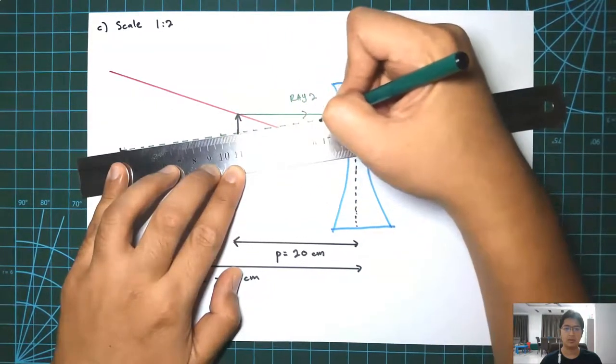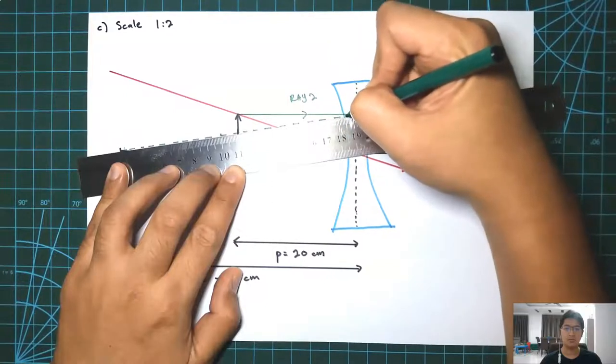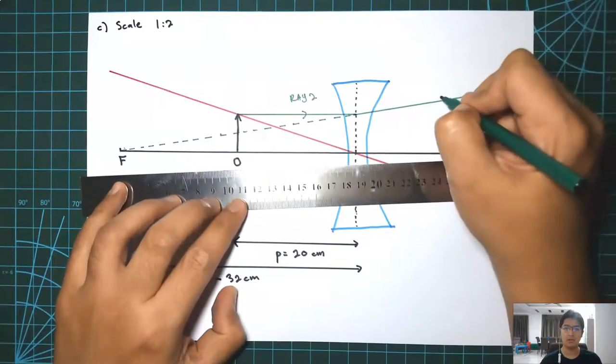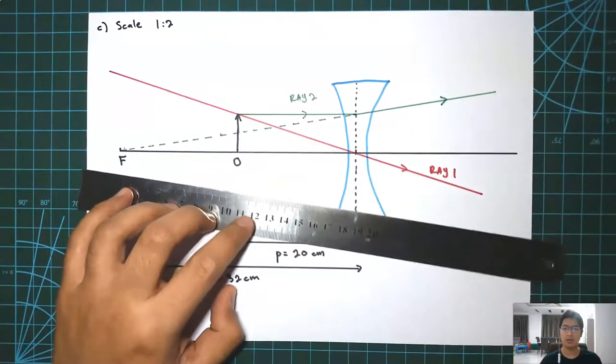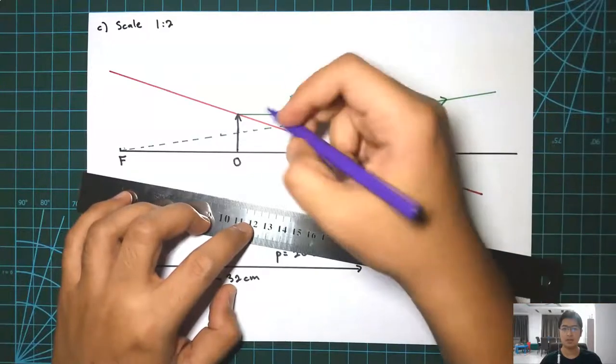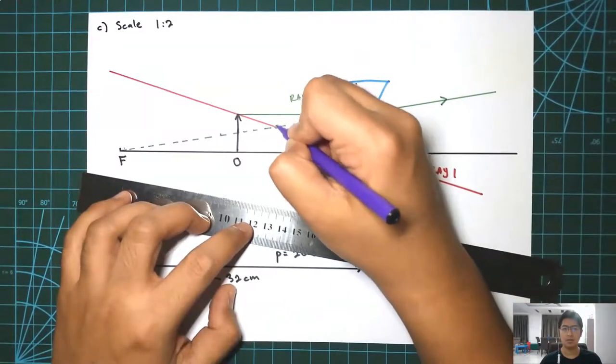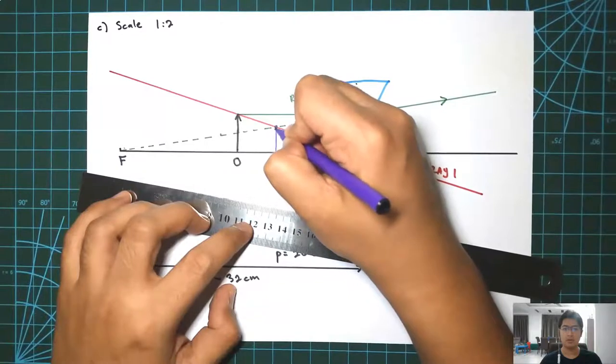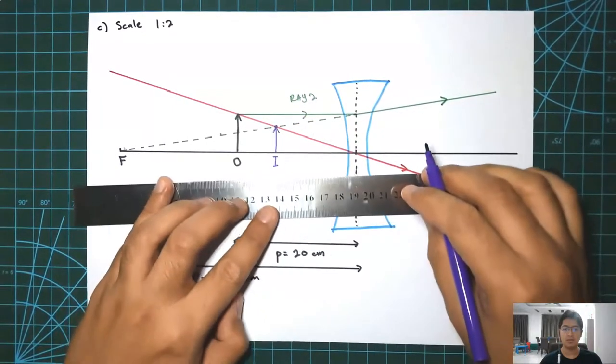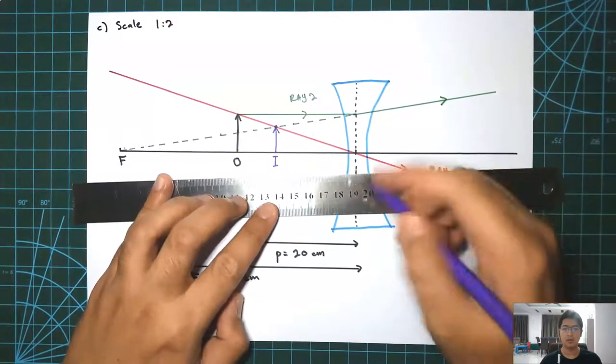And then you need to continue the ray. The ray will be diverged after the lens, and then you can actually draw the image here on the interception of ray 1 and ray 2.